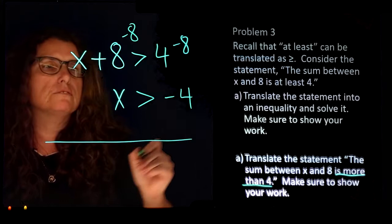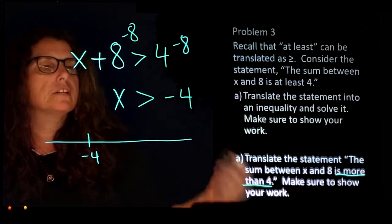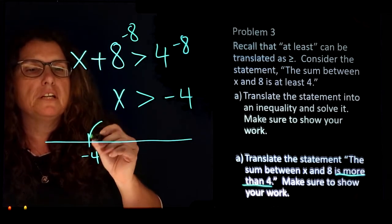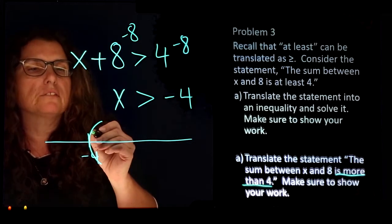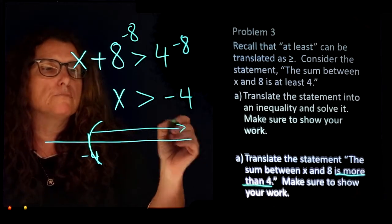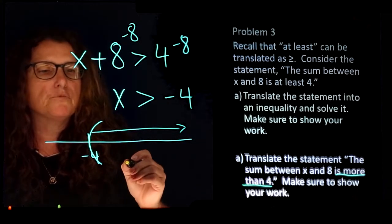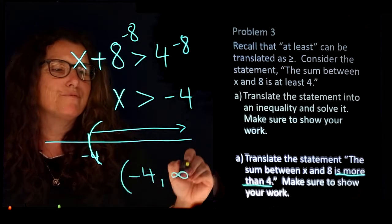Our graphical solution starts at negative 4. This time, greater than negative 4—negative 4 is not included. We need a parenthesis on negative 4, meaning it's not included, and our arrow points to the right going to infinity. The interval notation would be parenthesis negative 4 to infinity.